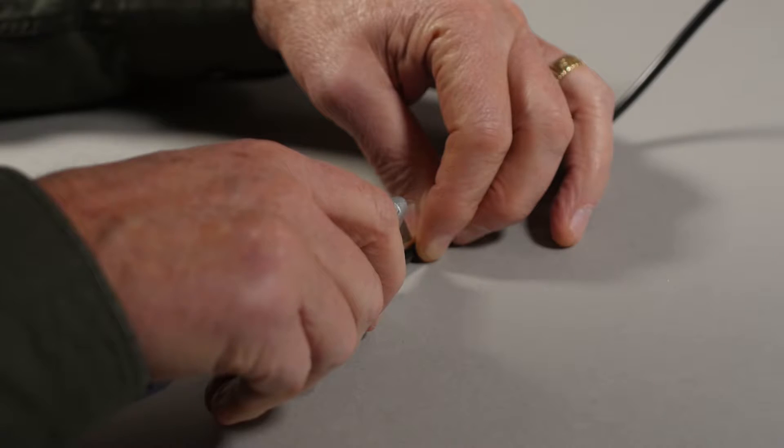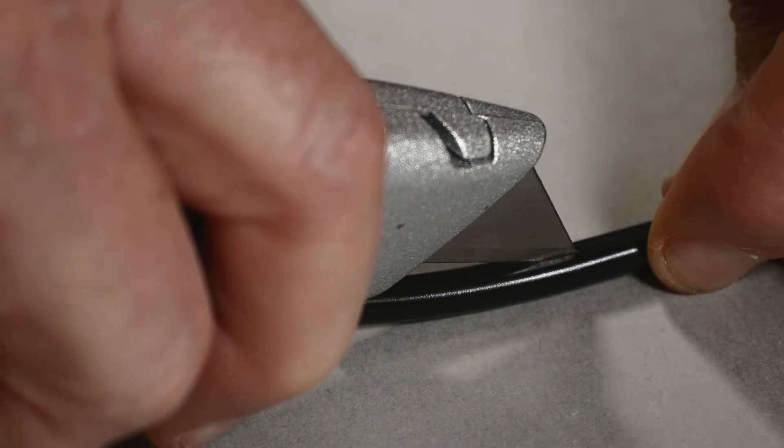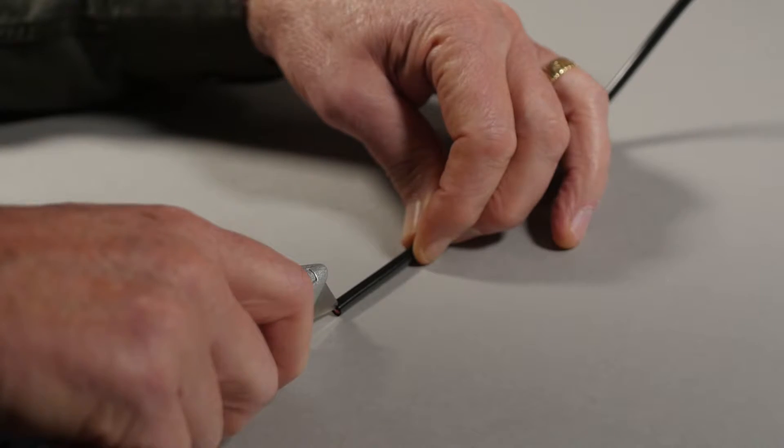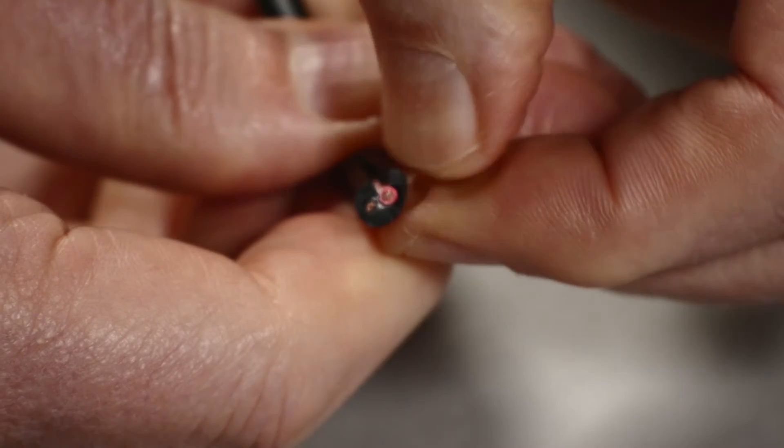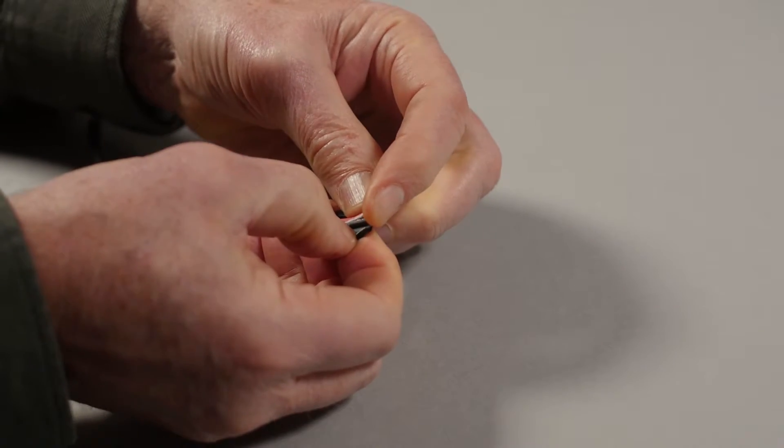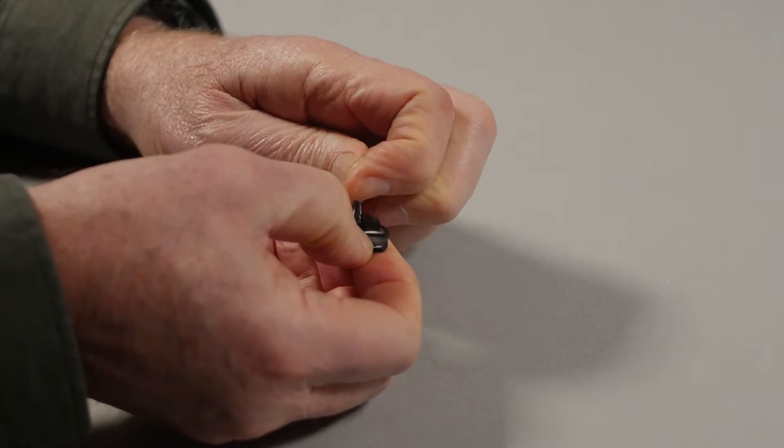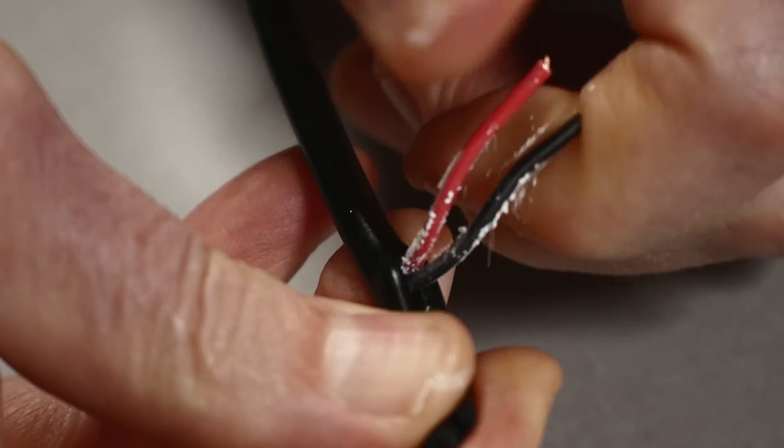Score the outer jacket of the wire using a utility knife or exacto blade. Flex the jacket until the scored section breaks through to expose the inner conductors. Slide the loose section of jacket off, leaving the conductors exposed.